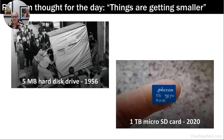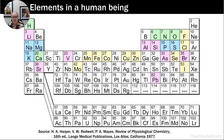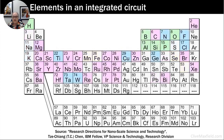A random thought: top left, a five-megabyte hard disk drive from 1956; bottom right, a one-terabyte microSD card from 2020. I remember using 1.44-megabyte floppy disks and thinking they were the bees knees. Another thought: these are the elements in the human body — the five most common being hydrogen, oxygen, calcium, carbon, and so on. By comparison, these are the elements in one of today's integrated circuits. In this context, you could say an integrated circuit is actually more complicated than a human being.